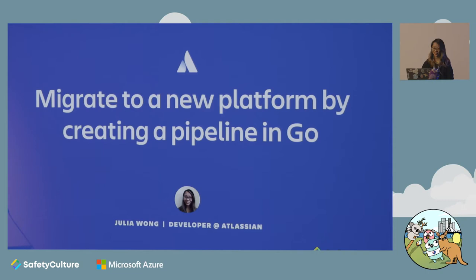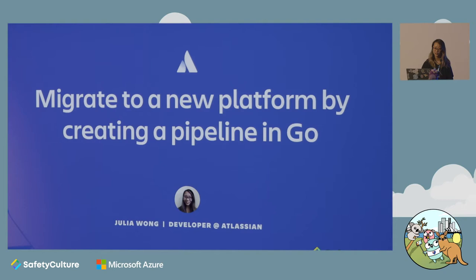At Atlassian, I work on the observability team, and one of the responsibilities we have is maintaining and providing support for our monitoring system. This system is absolutely crucial for our operations. It tells us if our services are healthy and gives us insights into them when they're not. The monitoring system is often the first indicator that something's wrong, and it sends us alerts so we can fix problems as soon as possible with minimal impact to our customers. We also use our monitoring system for capacity planning.